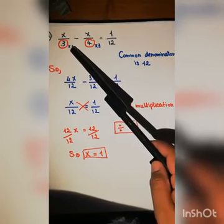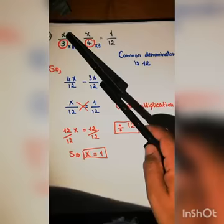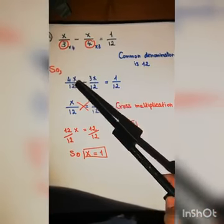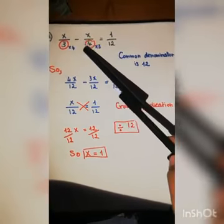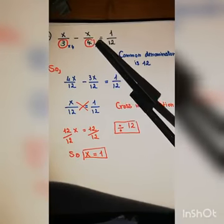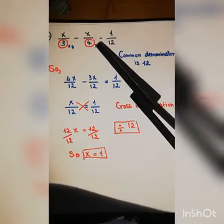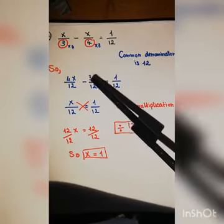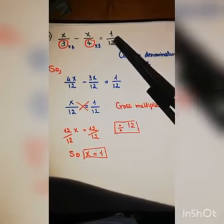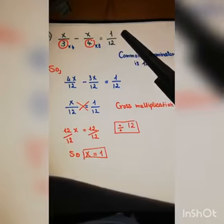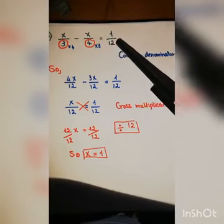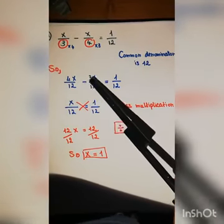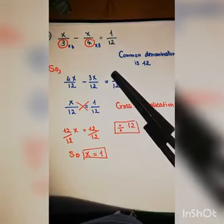To fix the first fraction, multiply numerator and denominator by four: x times four gives four x over twelve. For the second fraction, multiply by three: x times three gives three x, and four times three gives twelve. One over twelve is already fixed, so we have four x minus three x over twelve equals one over twelve.